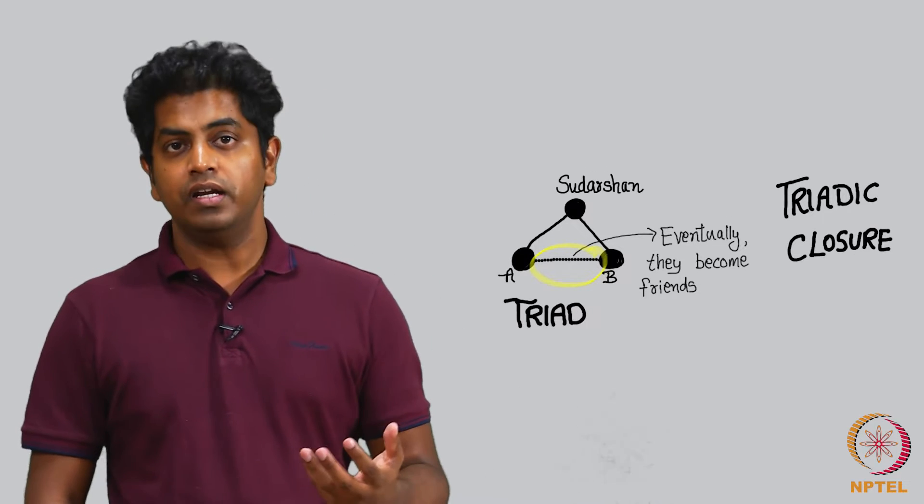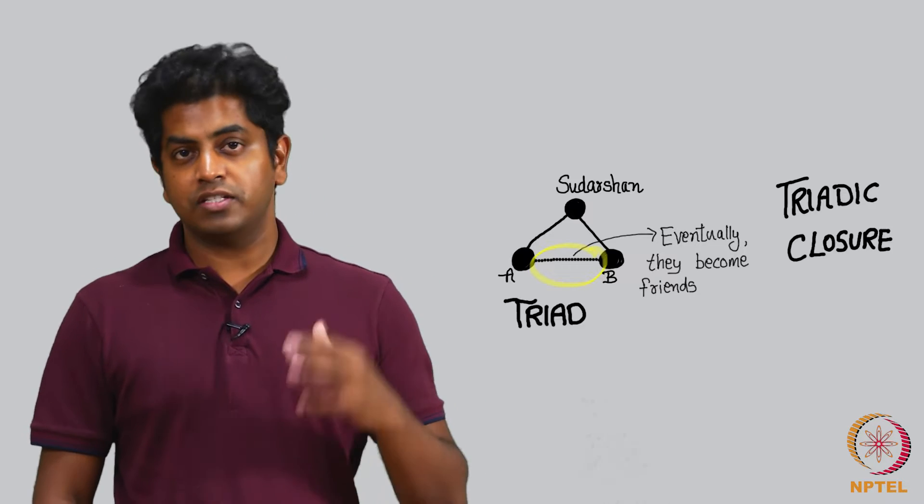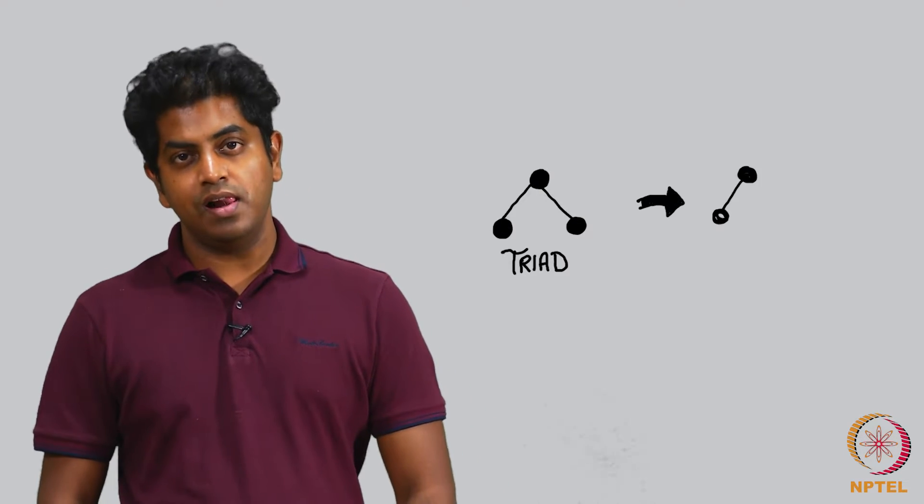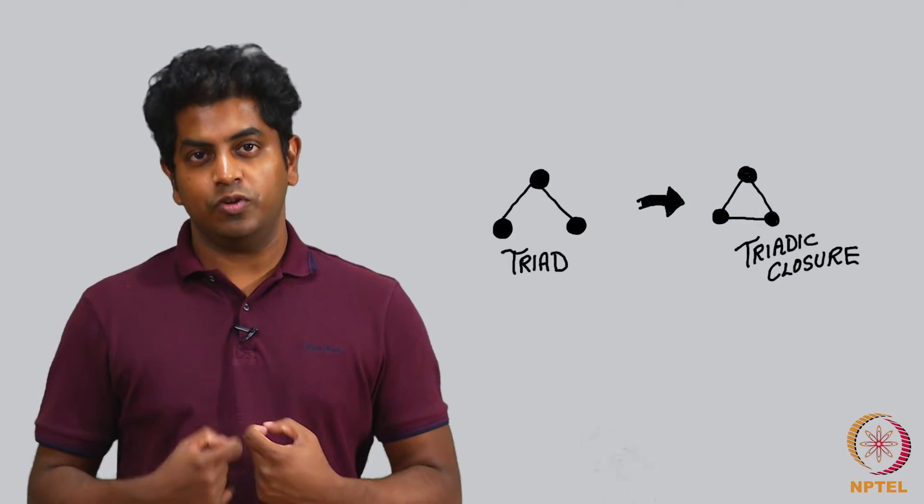So, you see there is a triad and it closes, and that is called triadic closure. Let this sink into your mind - this is one very important topic in social networks which will keep revisiting us in the forthcoming chapters. Triad becomes a triangle, and that concept is called the triadic closure.